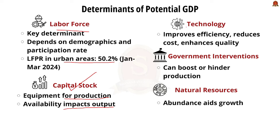The next determinant is technological advancement. Access to advanced technology can improve growth and productivity by improving efficiency, reducing cost, and developing quality. In India, the R&D percentage is only 0.7% of GDP according to the Economic Survey, which is a very concerning scenario. The next major determinant is government intervention — monetary policy particularly focuses on infusing capital, ensuring ease of access to funds which enable effective productivity in the economy.